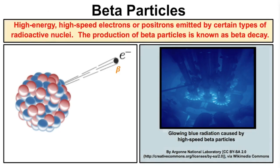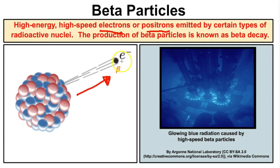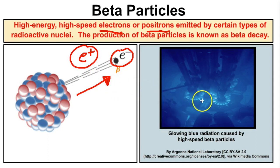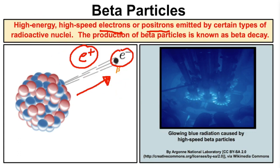Beta particles are high energy, high-speed electrons or positrons emitted by certain types of radioactive nuclei. The production of beta particles is known as beta decay. A beta particle is essentially an electron; if it has a positive charge, it's a positron. Here we can see some glowing blue radiation caused by high-speed beta particles emitting this blue light.